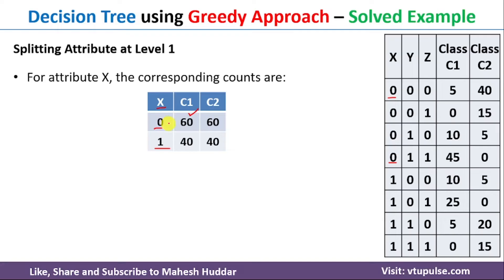When X equals 0, the number of C2 examples is 40 plus 15 plus 5 plus 0, which is again equal to 60. When X equals 1, counting C1 and C2 examples gives us 40 for C1 and 40 for C2. This is the contingency table we need.